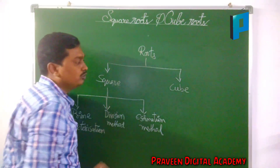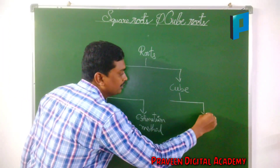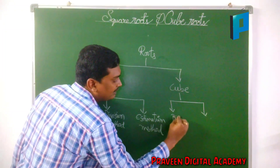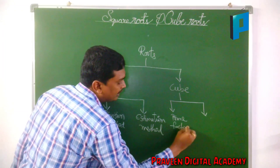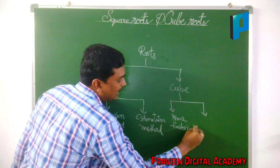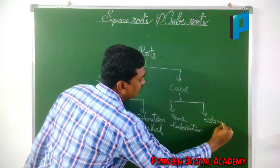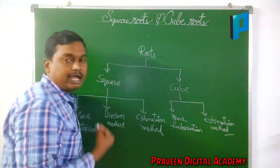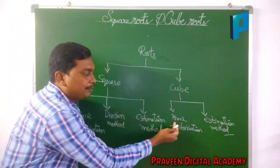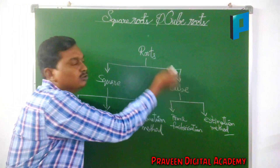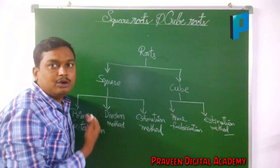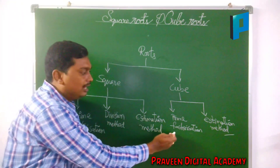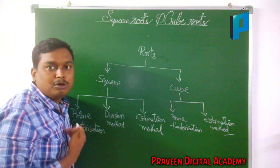Now coming to cube roots: cube roots can be solved in two different ways. The first one is the prime factorization method and the second one is the estimation method. So we have prime factorization, division, and estimation methods for square roots, and prime factorization and estimation methods for cube roots.